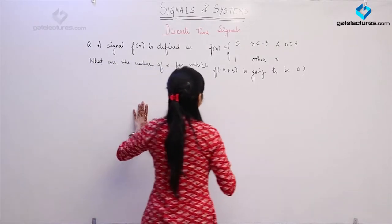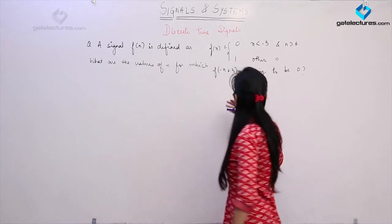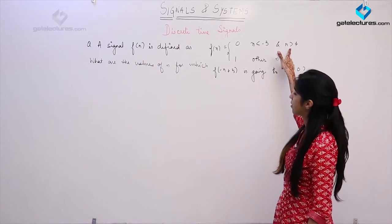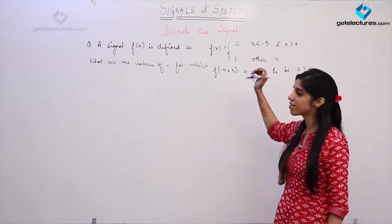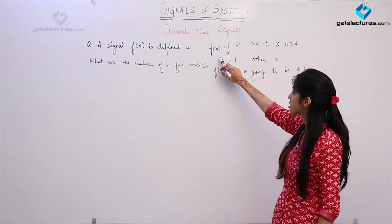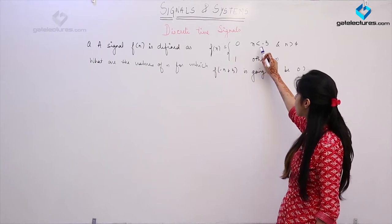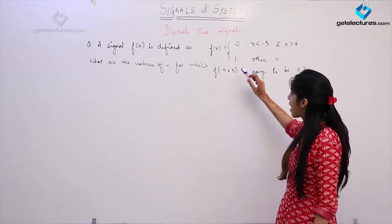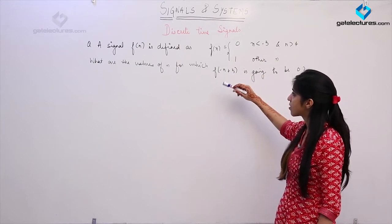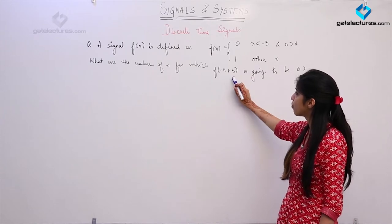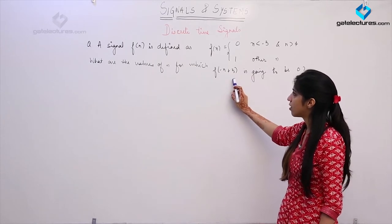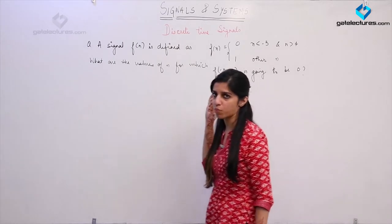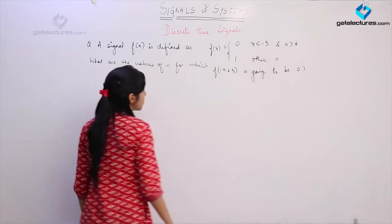If given a function f(n) which is 0 for all values less than minus 3 and n greater than 4 — that is, this function exists only between n = -2 to n = 3 — and it is asking: if you perform these two operations, then between what boundaries is this function going to exist?